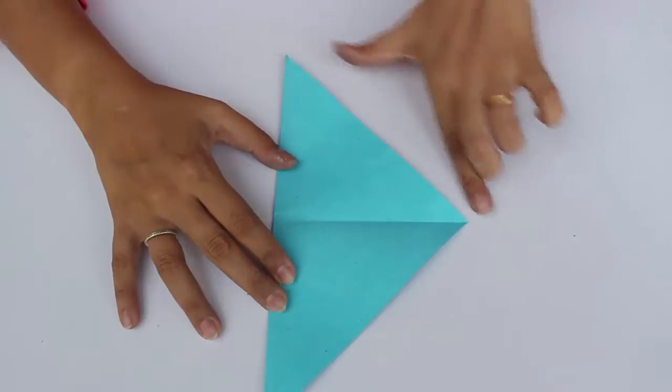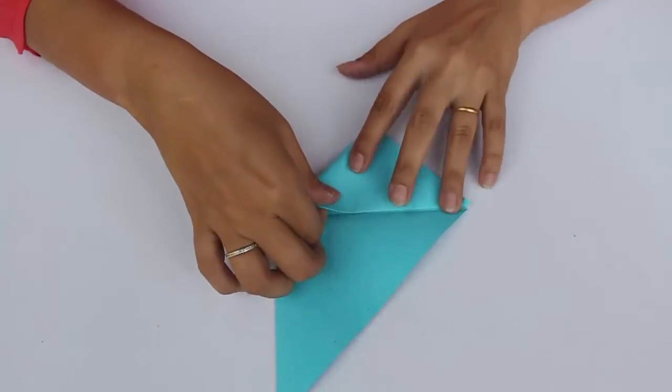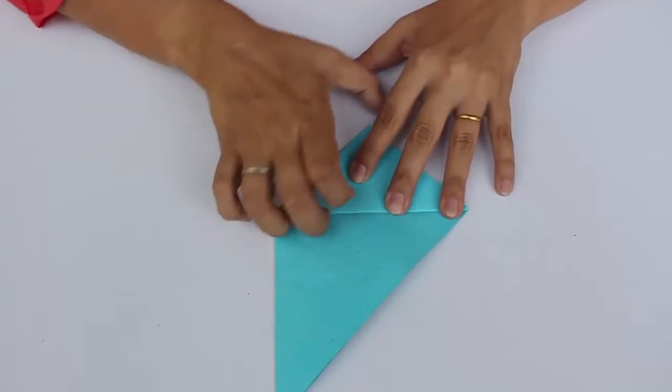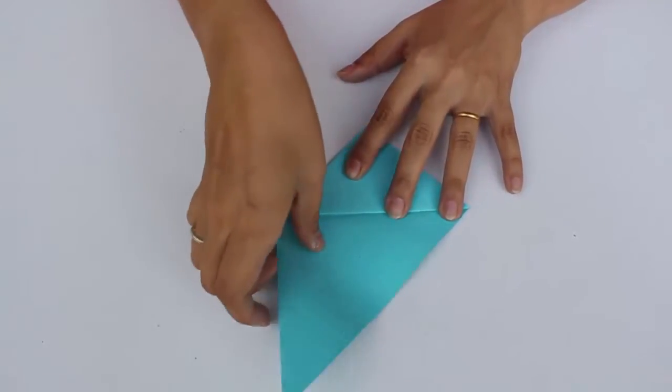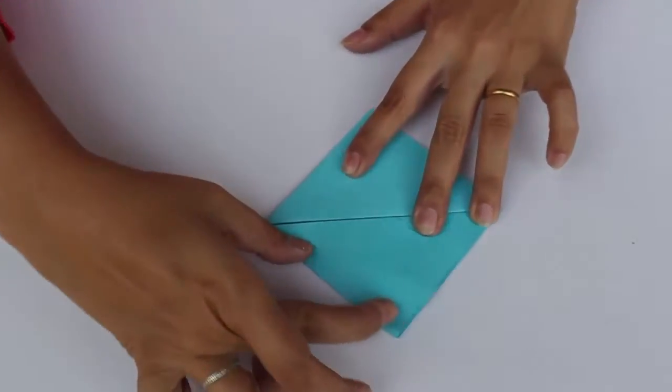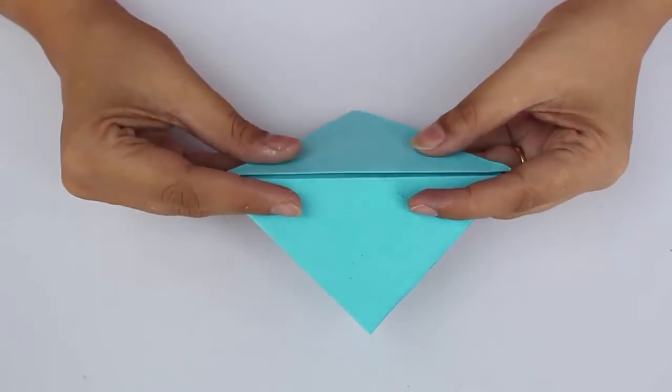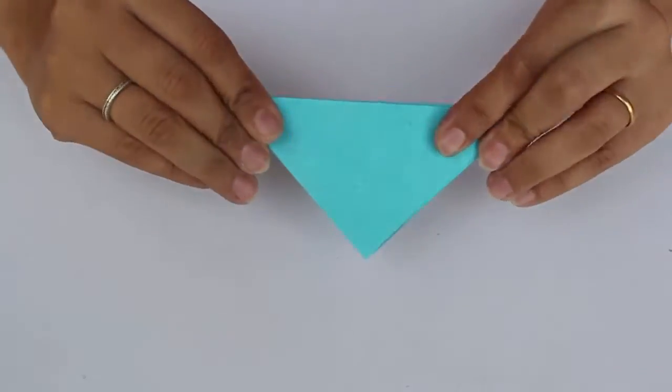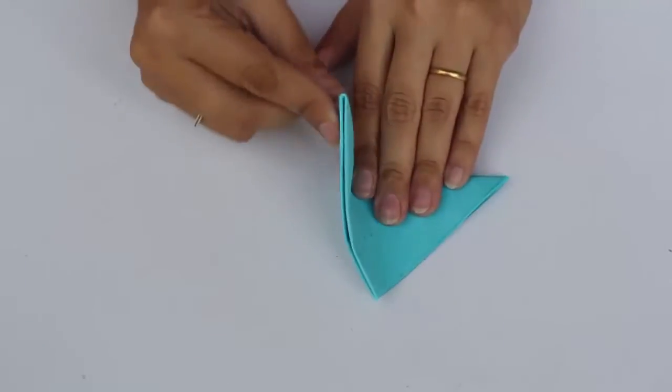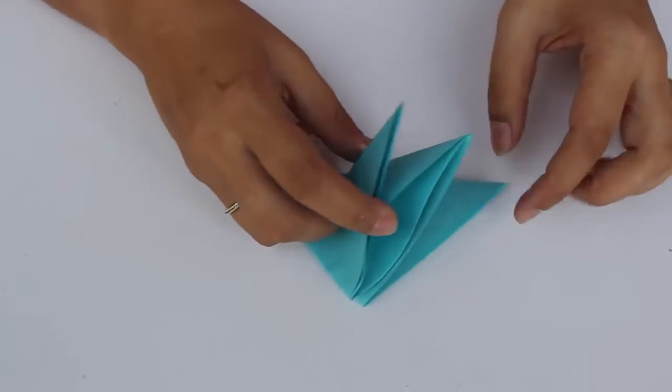Fold each of the hypotenuse into half like this. The central line that you get, fold it backwards this way, so that on one end you have only one fold over here. On the other, you have three flaps.